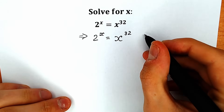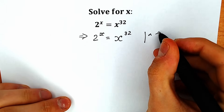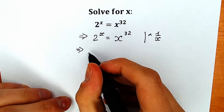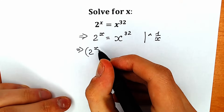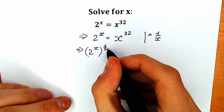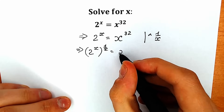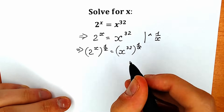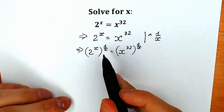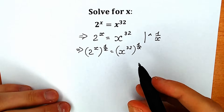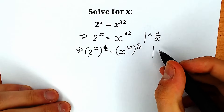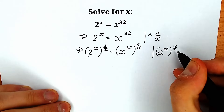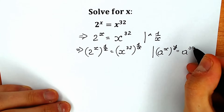Our first step: we're going to raise both sides to the power 1 over x. This is a really important moment. When we raise both sides to the power 1 over x, we get 2 to the power x raised to the power 1 over x, equal to x to the power 32 raised to the power 1 over x. Now, a really important property: a to the power x raised to the power y equals a to the power x times y.